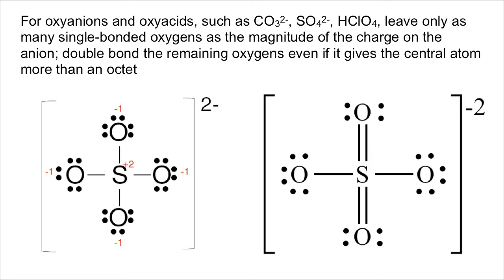So the rule is: if you look at the charge on the anion, you're only allowed to single bond that many oxygens. This is two minus, which means I'm only allowed to have two single-bonded oxygens. And that's this structure over here on the right — this is a better structure. We have two single-bonded oxygens and two double-bonded oxygens. That does give sulfur more than an octet, but that's okay because sulfur is in period three, and period three elements are allowed to expand their octet. And as you'll see later when you learn about formal charges, the formal charges on this structure are much closer to zero.